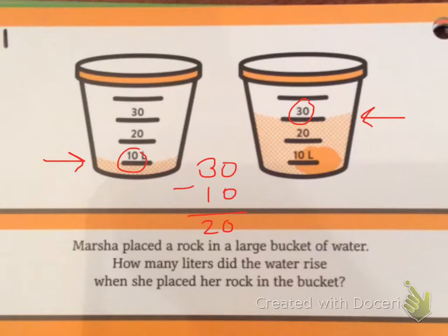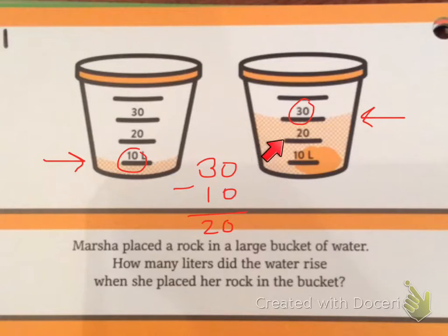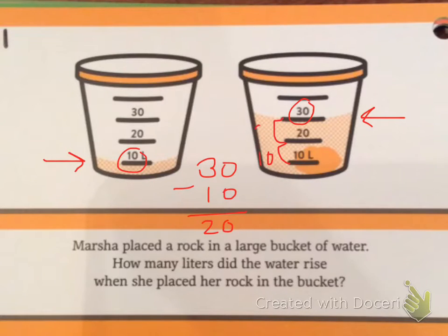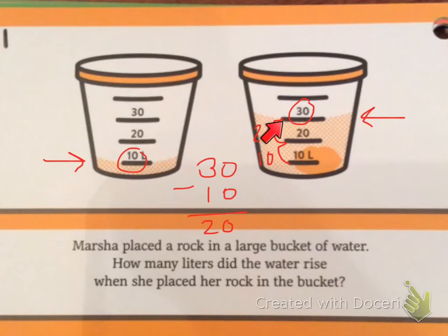Another way you could have done it was you could have realized, oh look, this is skip counting by tens. So I could have done 10, 20. It is 20 liters higher now that the rock is in the water.